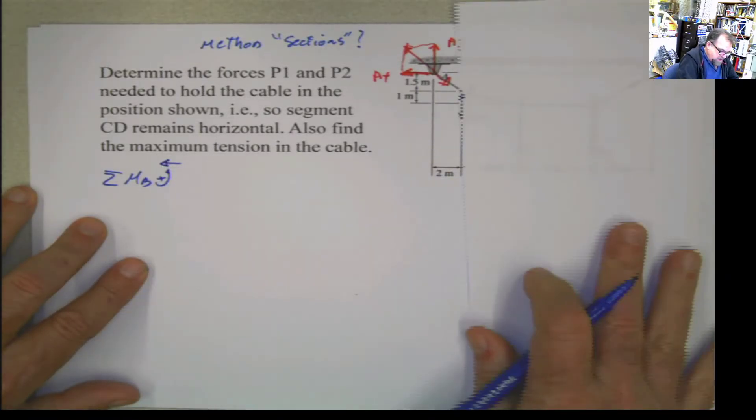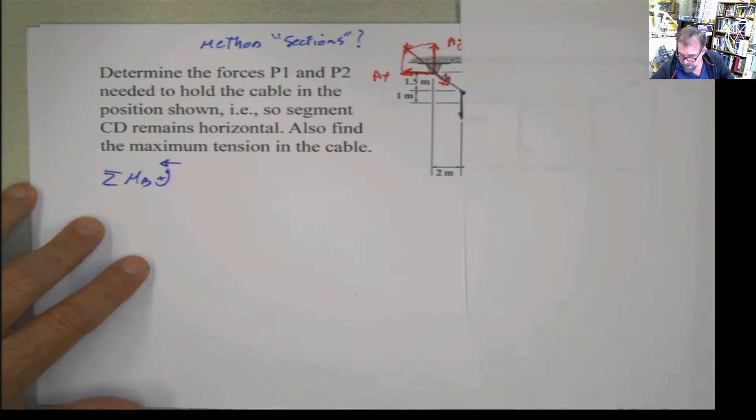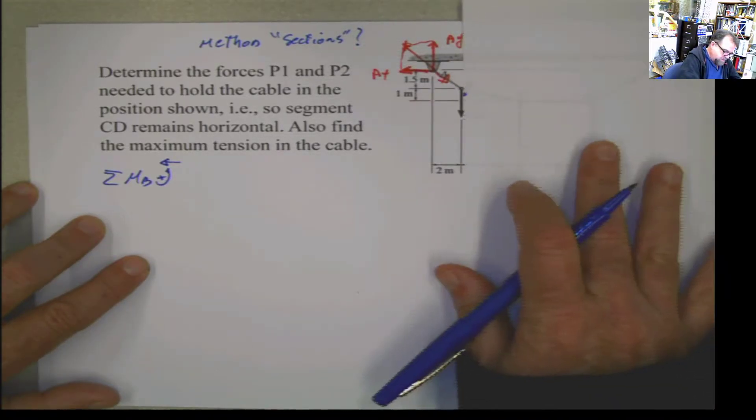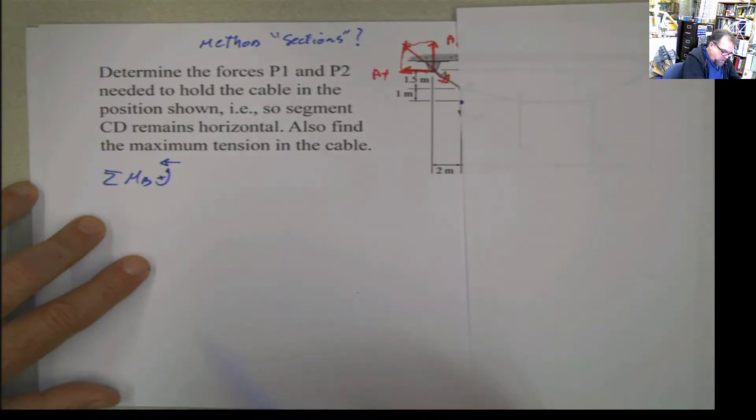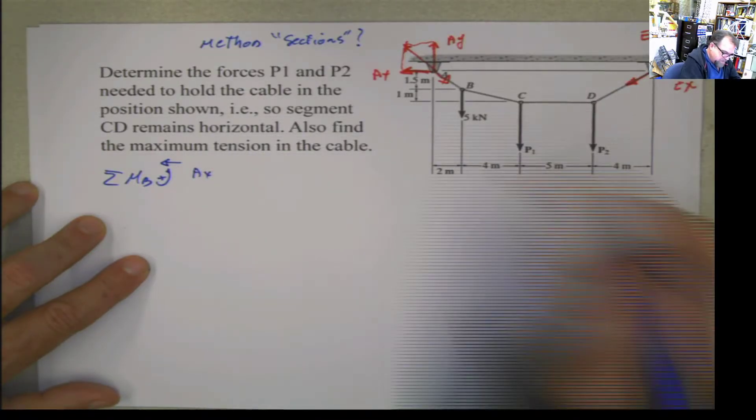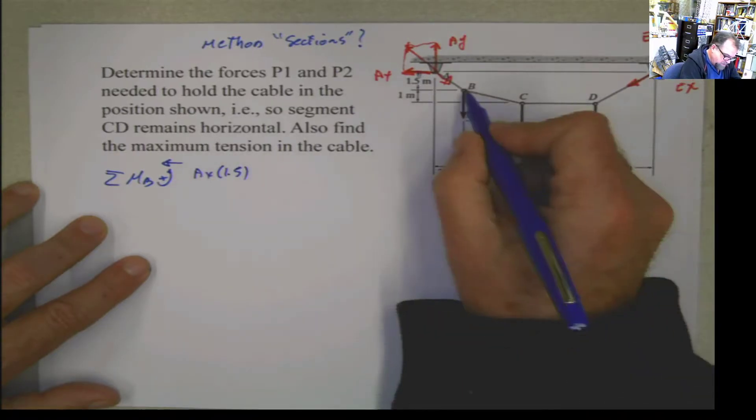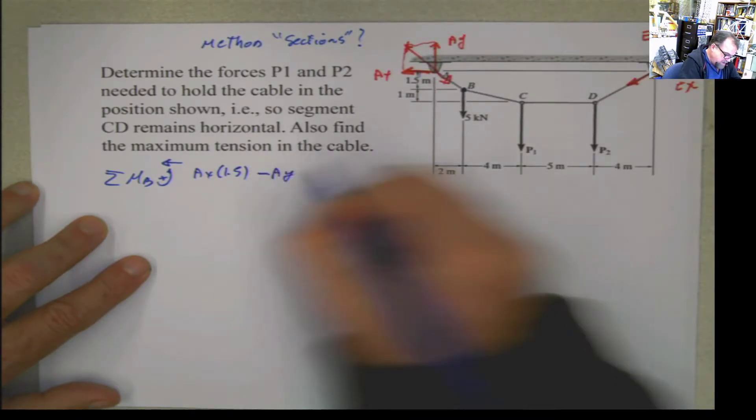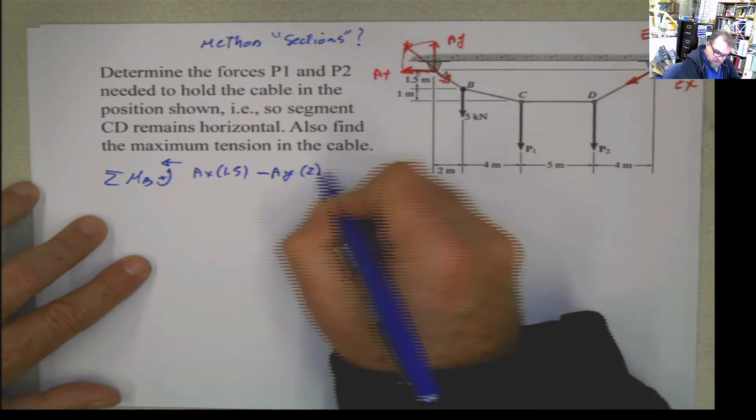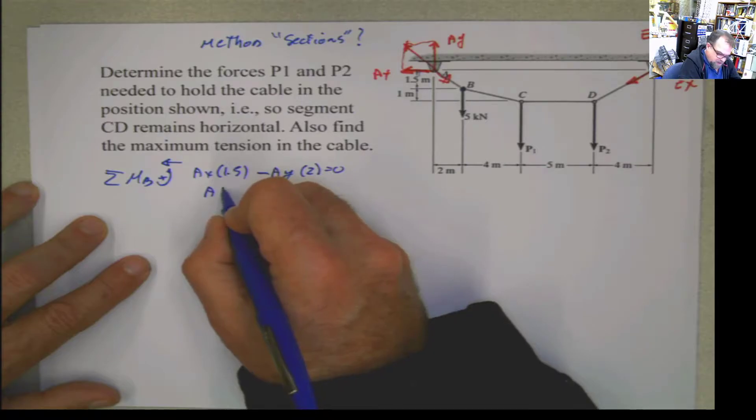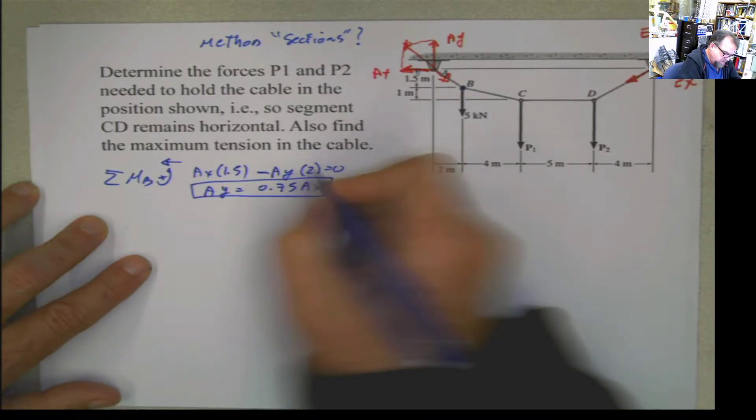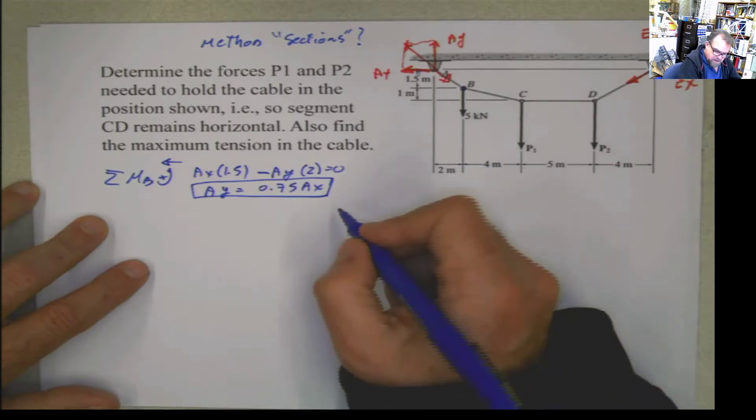Using this side of the cable, I'm going to have AX multiplied by this distance, 1.5, from point B. So AX times 1.5 positive. And this AY is going to be negative, multiplied by this distance, which is 2, equals 0. Then I can solve and say AY, if I solve for AY, it's going to be 0.75 AX.